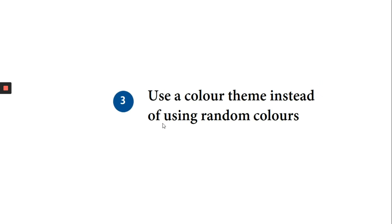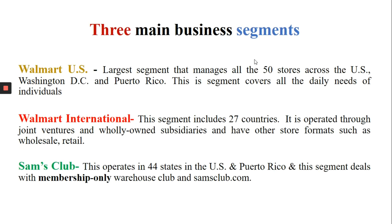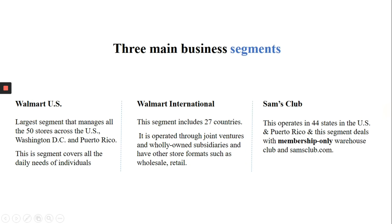Tip number three: use a color theme instead of using random colors. In this slide, multiple colors are used to highlight different parts, which is very distracting. But in this slide, we can see that the colors black and blue are only used to distinguish between the three parts, which maintains a harmony.